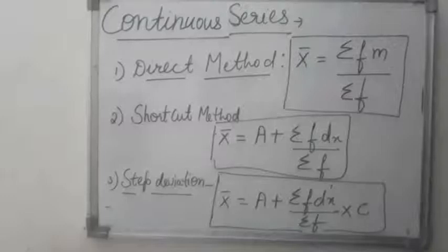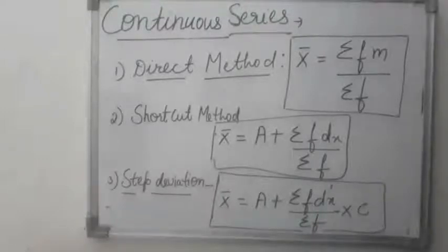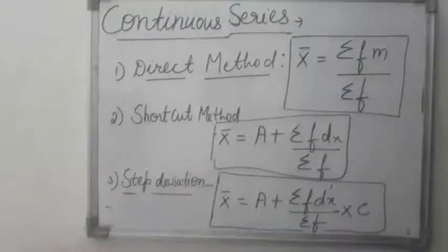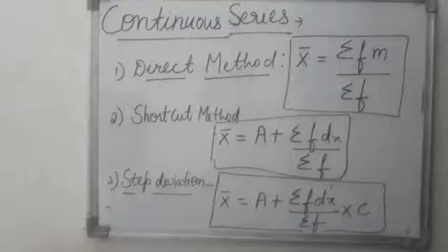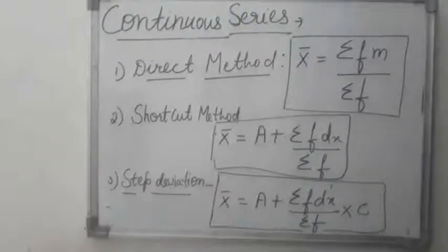The direct method formula is: X-bar = summation of frequency multiplied by midpoints (M), divided by summation of frequency. In the second shortcut method, also called the assumed mean method: X-bar = A + (summation of frequency multiplied by deviation) divided by summation of frequency. The third is the step deviation method, where X-bar = A + (summation of F·D') divided by summation of F, multiplied by C, where C is the common factor.